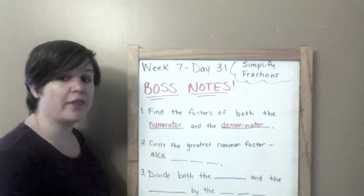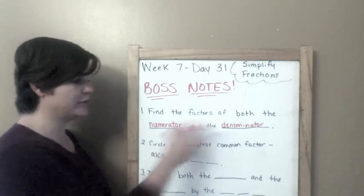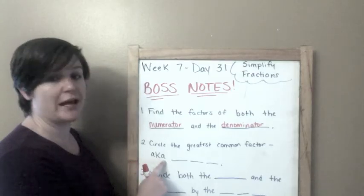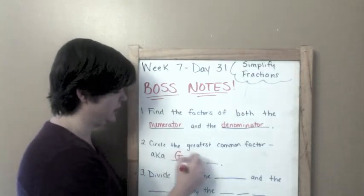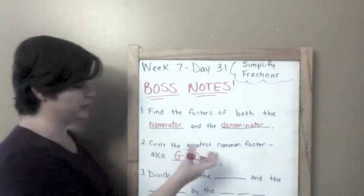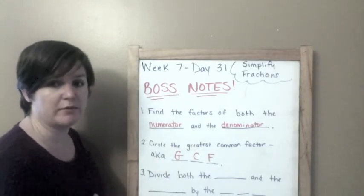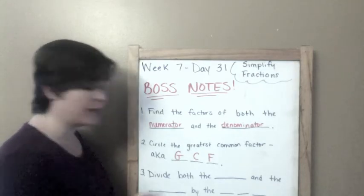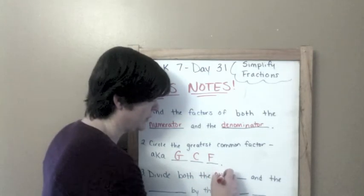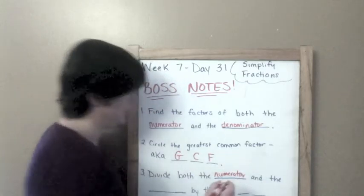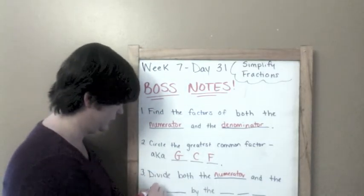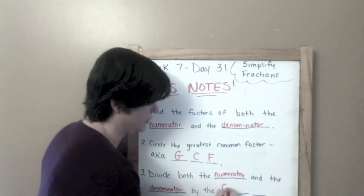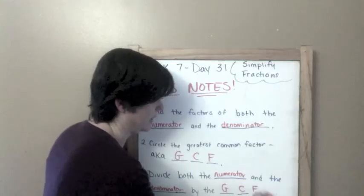We will then circle the greatest common factor that both the numerator and the denominator share. This is also known as the GCF. I might refer to it in this lesson as the greatest common factor or the GCF for short. We're going to divide both the numerator and the denominator by the GCF.